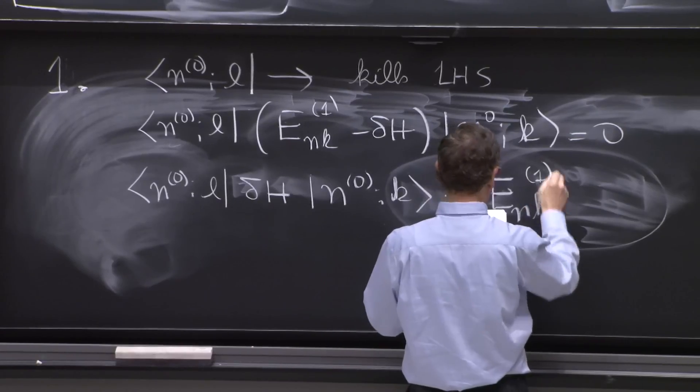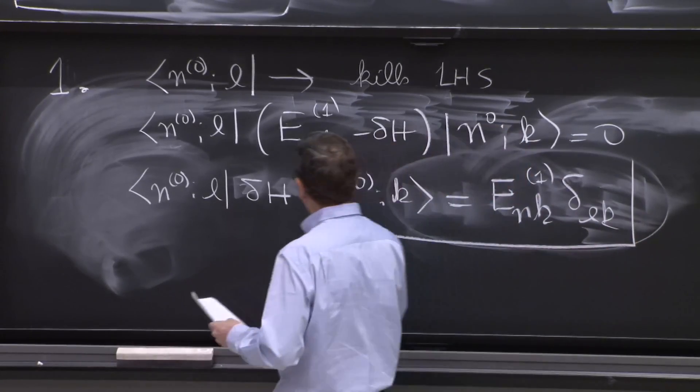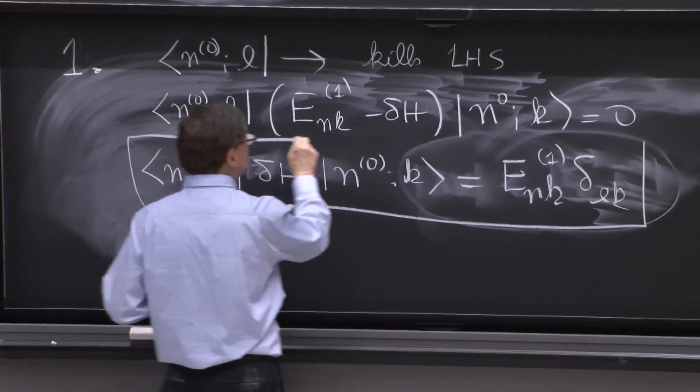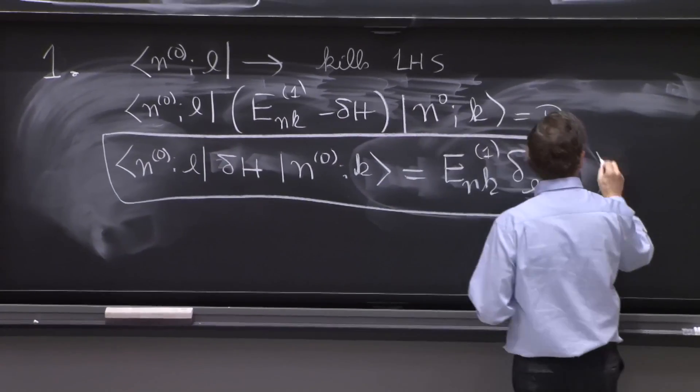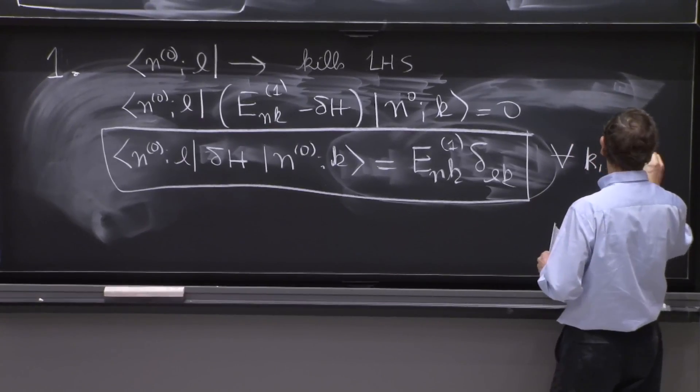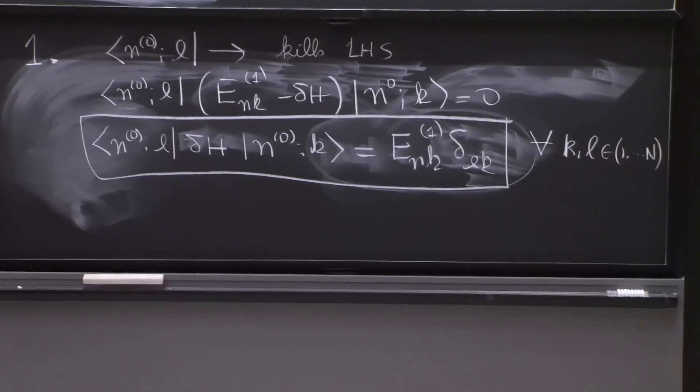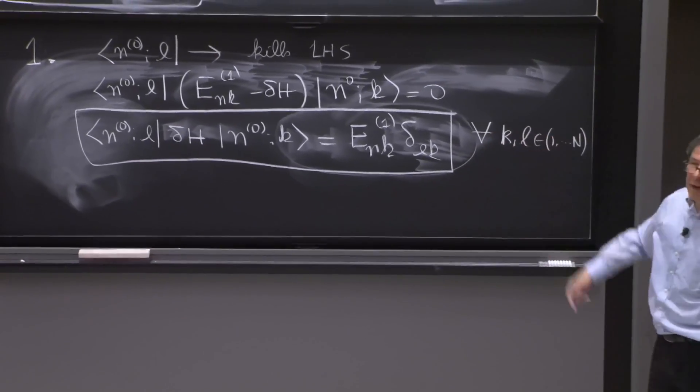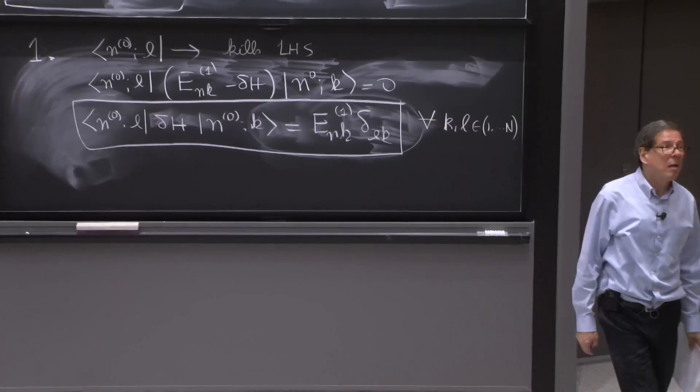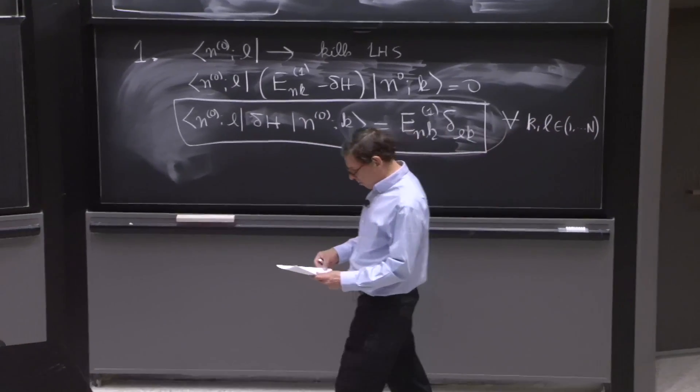Let's write it just by moving one term to the left and one term to the right. n0k enk1 delta lk. And this should be true for all k and l in one up to n, because those equations are for all k.